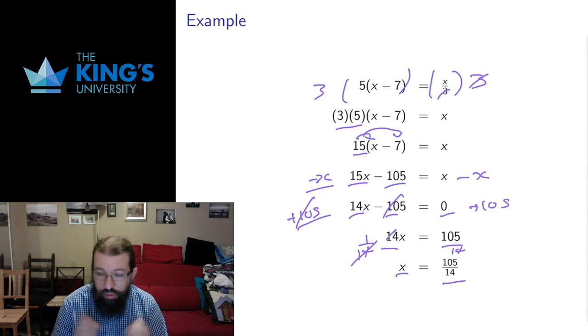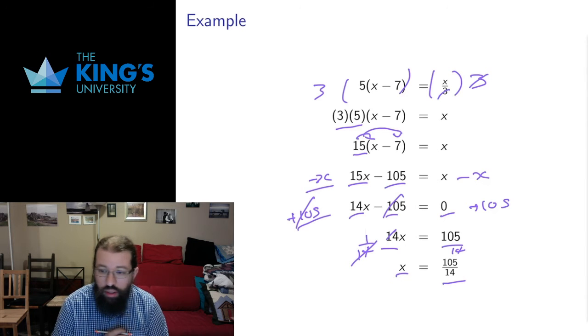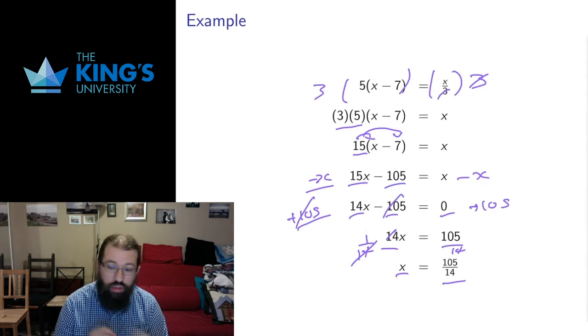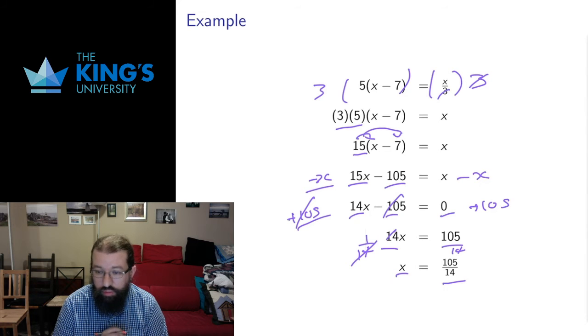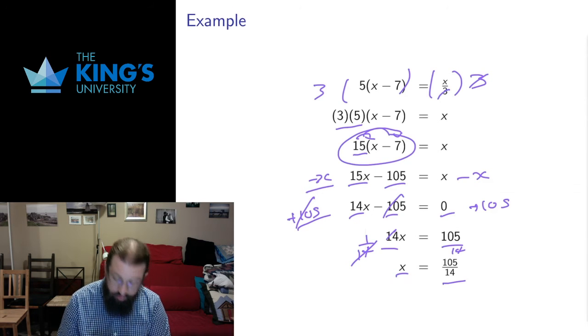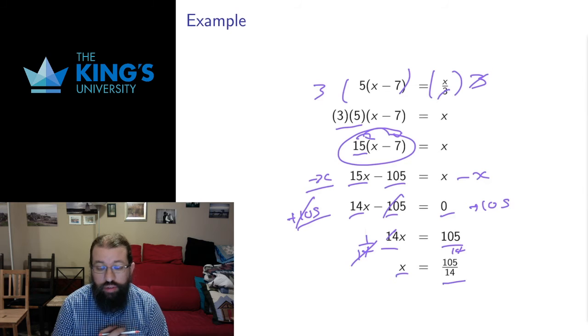Please notice that I'm being very careful that any time I do something that changes the situation, I do the same thing to both sides of the equation. The only exception was this distribution, but that doesn't actually change anything. That's just taking the same expression and writing it in a different way.